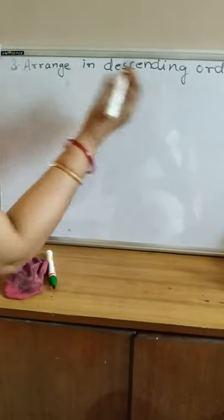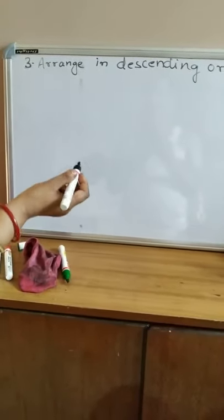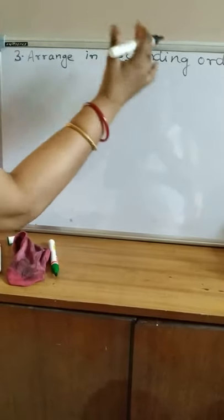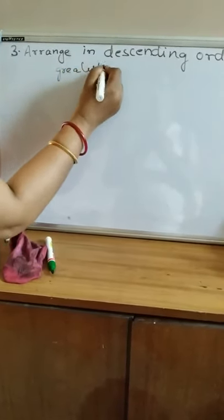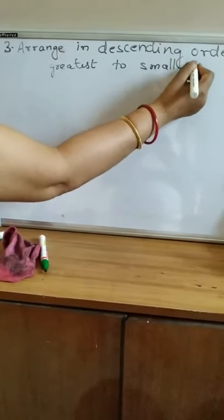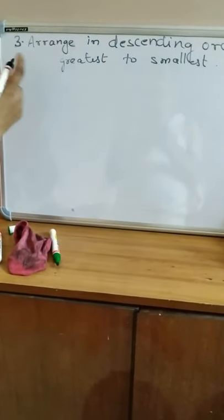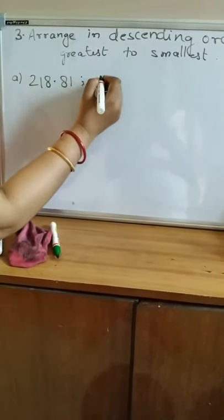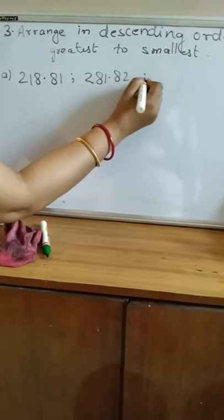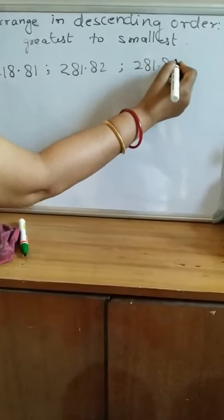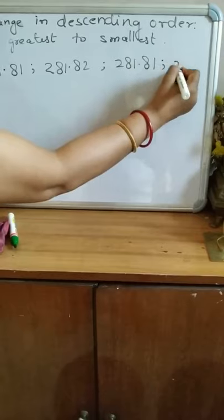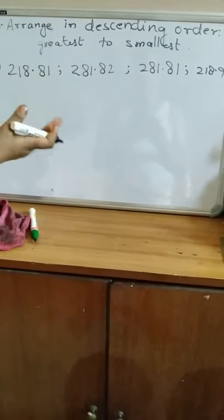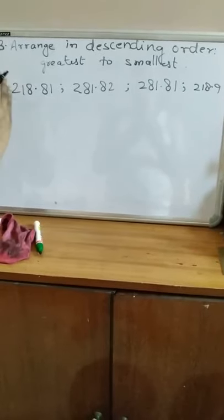Question number 3: arrange in descending order. Descending order means arranging from the greatest number to the smallest number — the ordering of a group of numbers from greatest to smallest. This is the same concept you have learnt for whole numbers, now applied to decimal numbers.